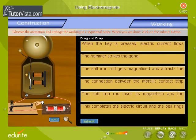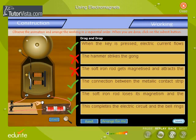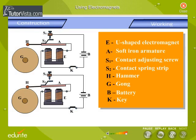Observe the animation and rearrange the working in a sequential order. When you are done, click on the Submit button. Displayed here is the schema depicting the working of an electric bell.